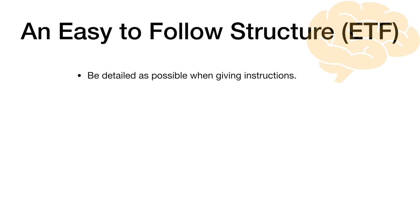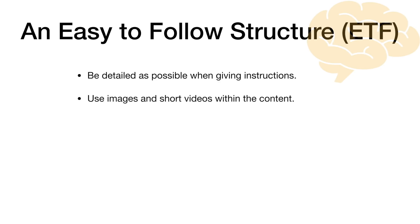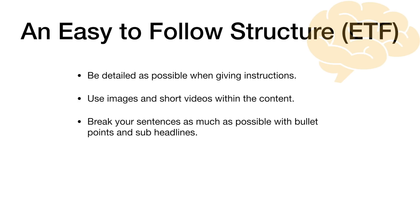The first point is to be as detailed as possible when giving instructions. When you're talking about really technical or niche-related stuff — for example, if you're selling a weight loss product to a very specific weight loss audience — you can be as detailed as possible, and people actually appreciate that. Next, use images and short videos within the content to keep people on your content and engaged. And break your sentences as much as possible with bullet points and sub-headlines — this is really, really important. It keeps your content readable and doesn't feel bulky.